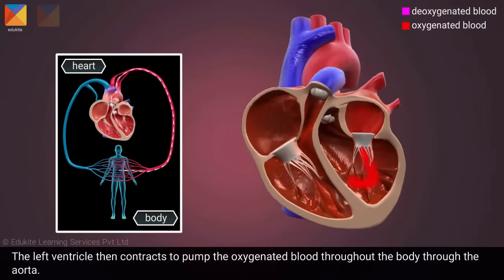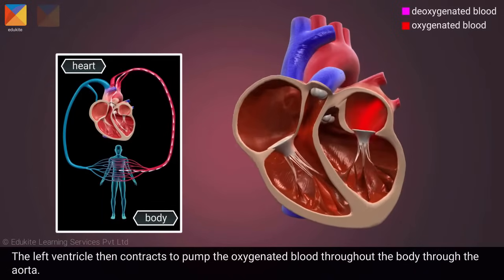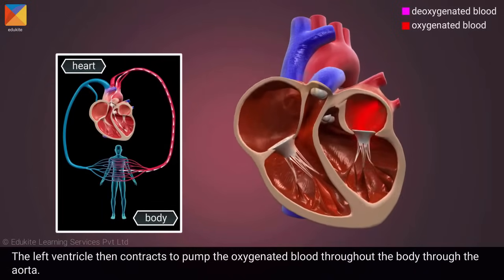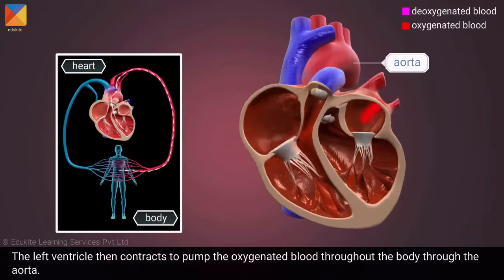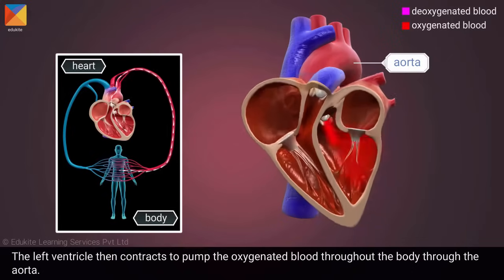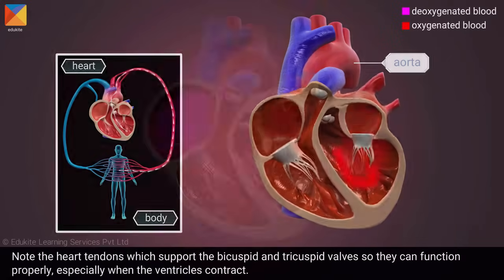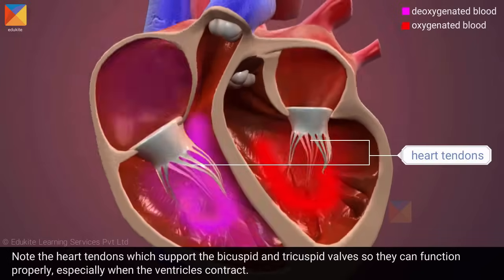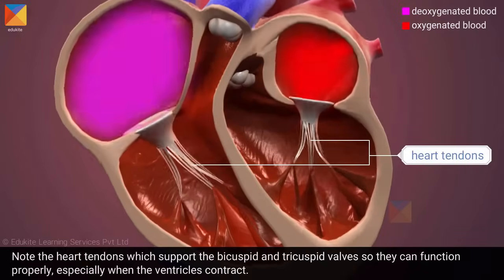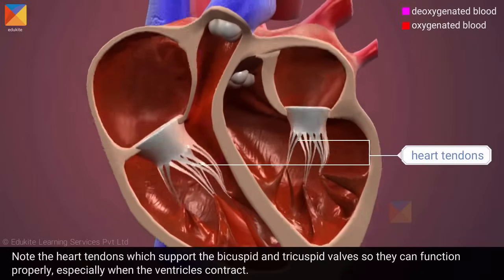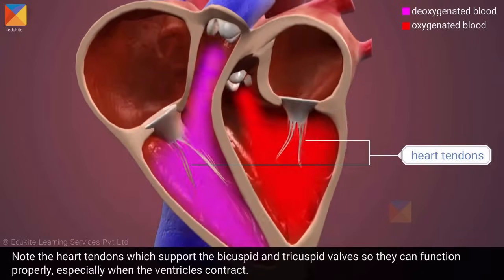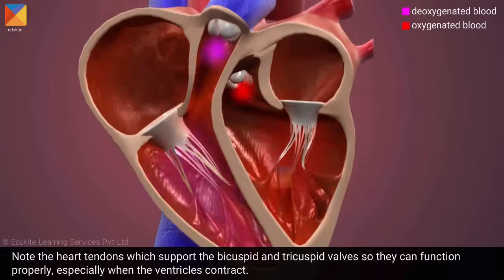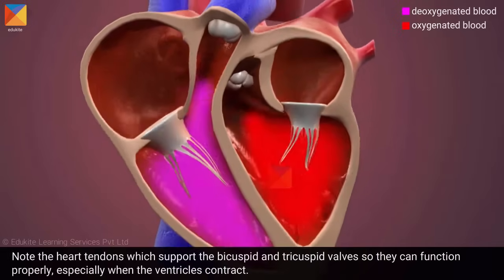The left ventricle then contracts to pump the oxygenated blood throughout the body through the aorta. Note the heart tendons which support the bicuspid and tricuspid valves so they can function properly, especially when the ventricles contract.